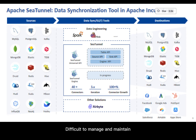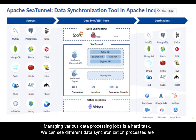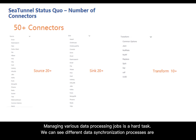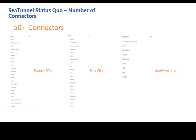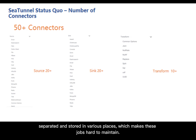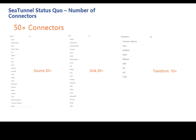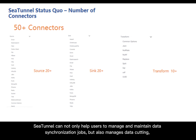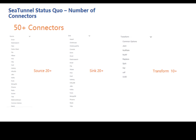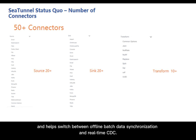Managing various data processing jobs is a hard task. Different data synchronization processes are separated and stored in various places, which makes these jobs hard to maintain. C-Tunnel can not only help users manage and maintain data synchronization jobs, but also manages data cutting and helps switch between offline batch data synchronization and real-time CDC.